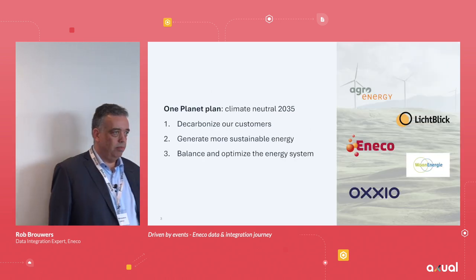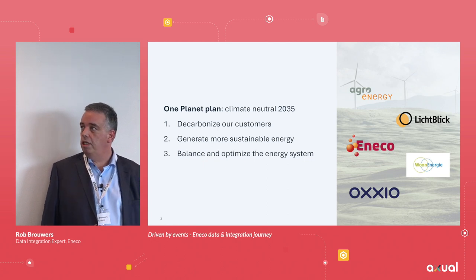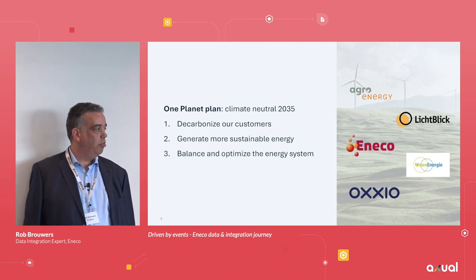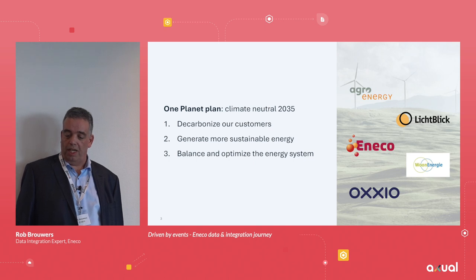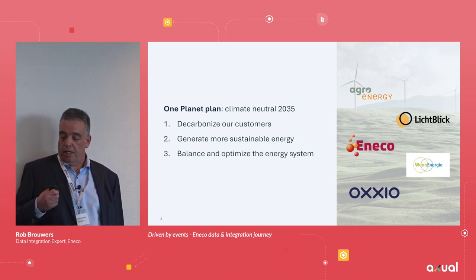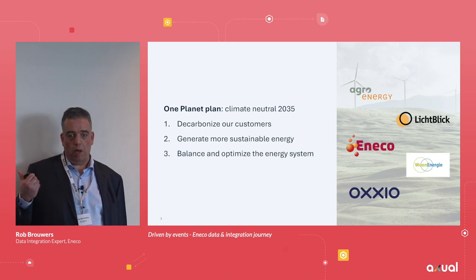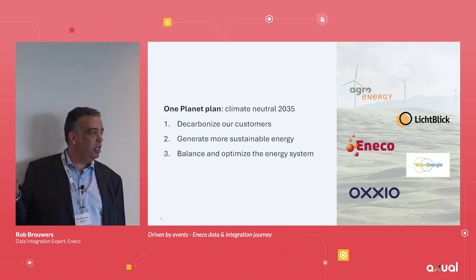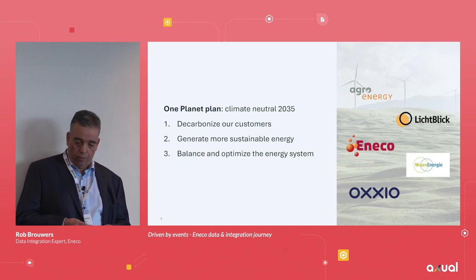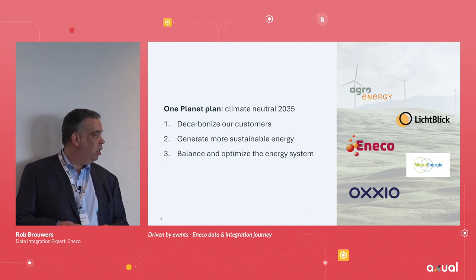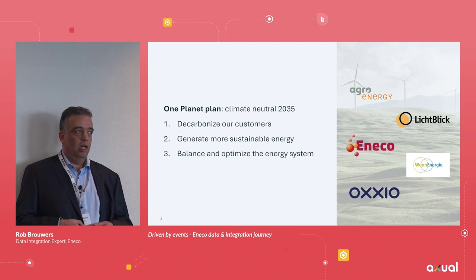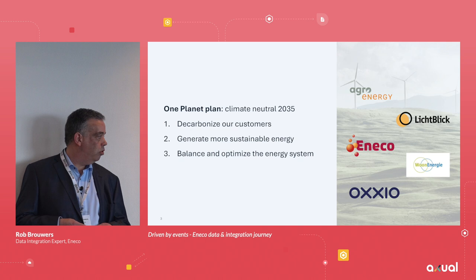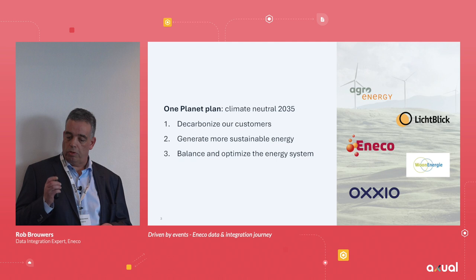A little bit about Eneco. We're an energy company — we sell energy to customers, but we also want to produce energy. Our mission for the coming years is the green mission: the One Planet Plan. The three pillars are helping customers become more green, producing more sustainable energy, and the third — most interesting for today — is optimizing the system. We produce energy and have other assets in the network, giving us the opportunity to help optimize it for the grid and for customers.